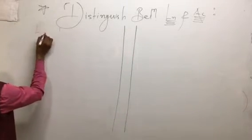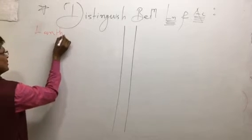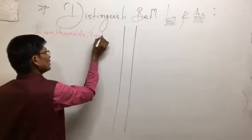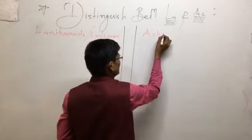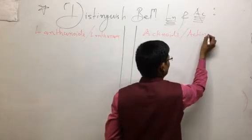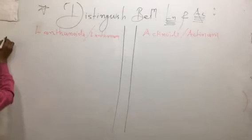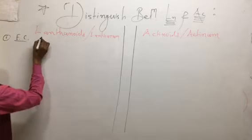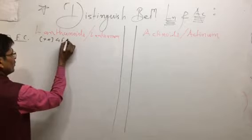First, lanthanoids. Lanthanoids represent the f-block series, also called the lanthanide series. This is the electronic configuration of the lanthanoid series — the 4f series.